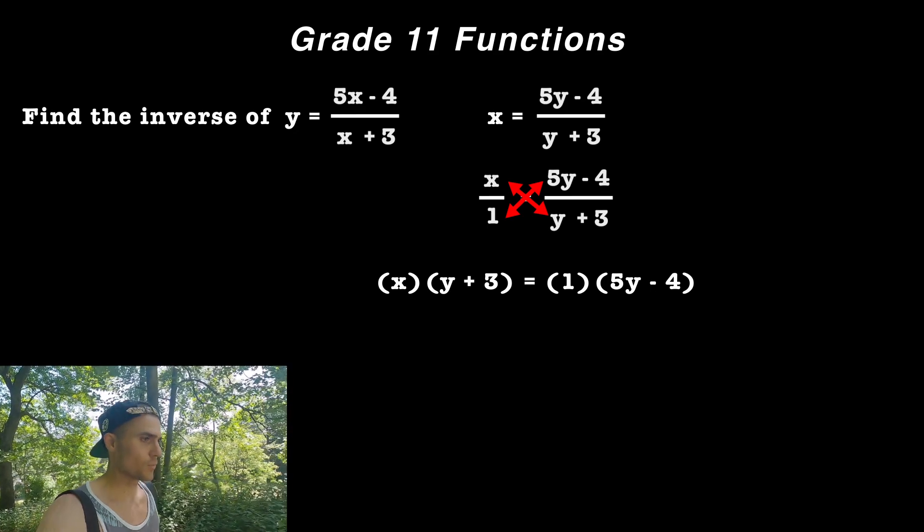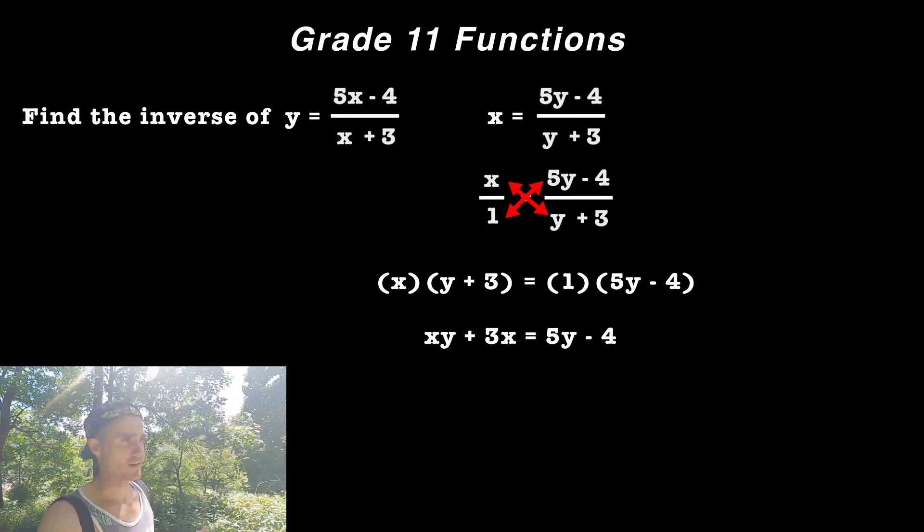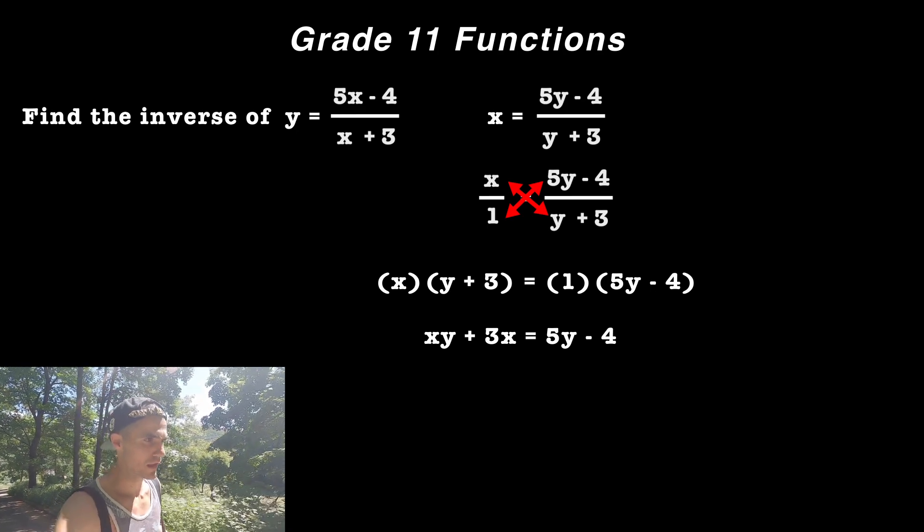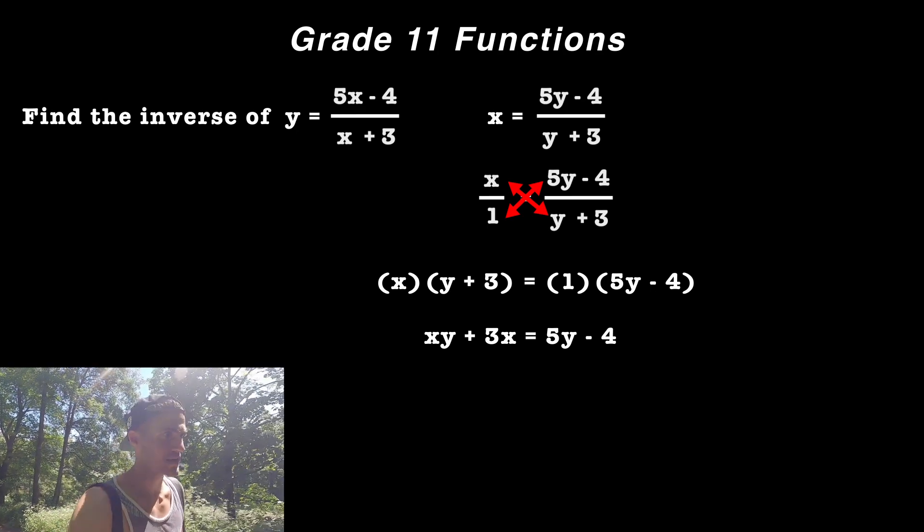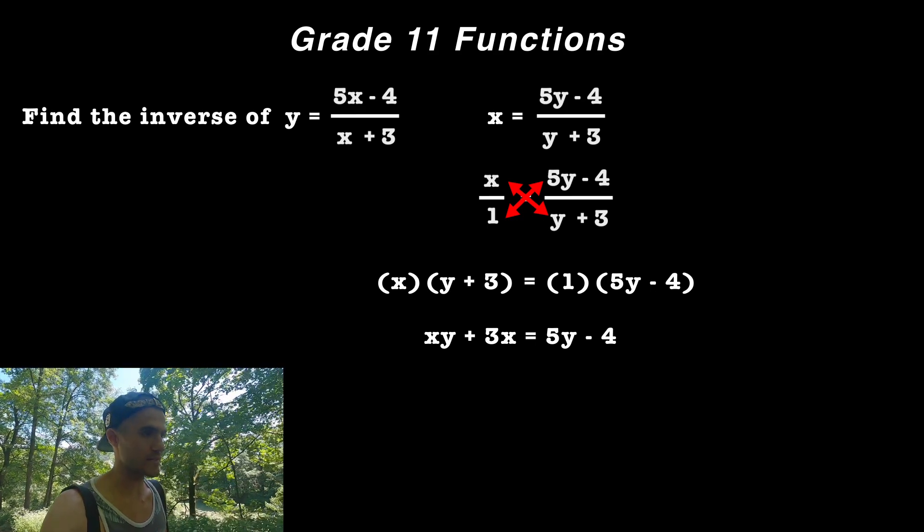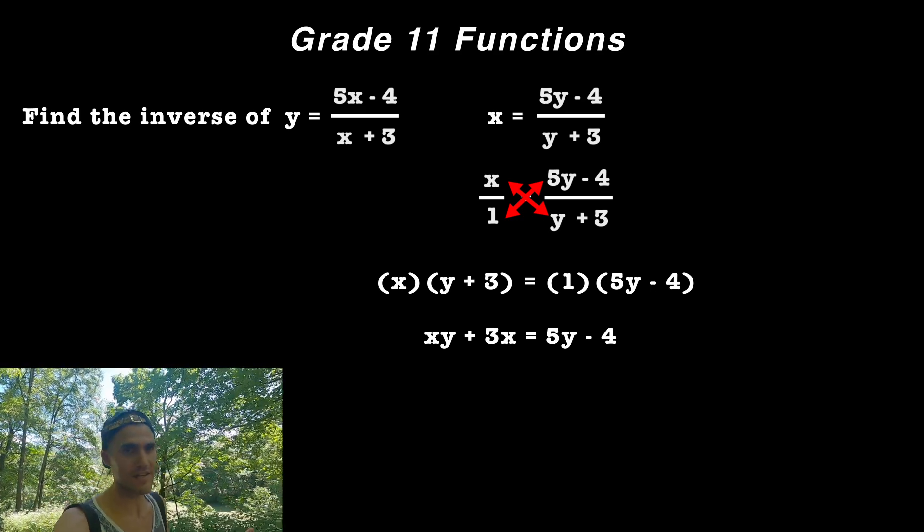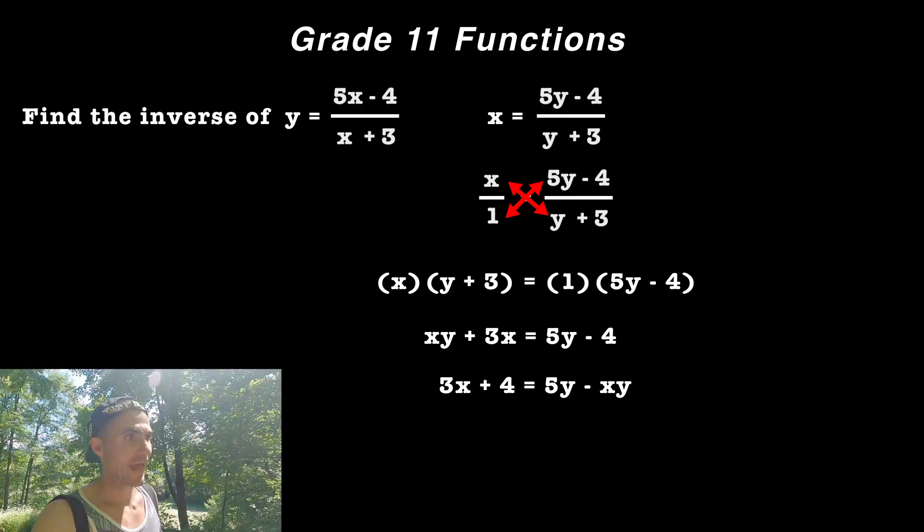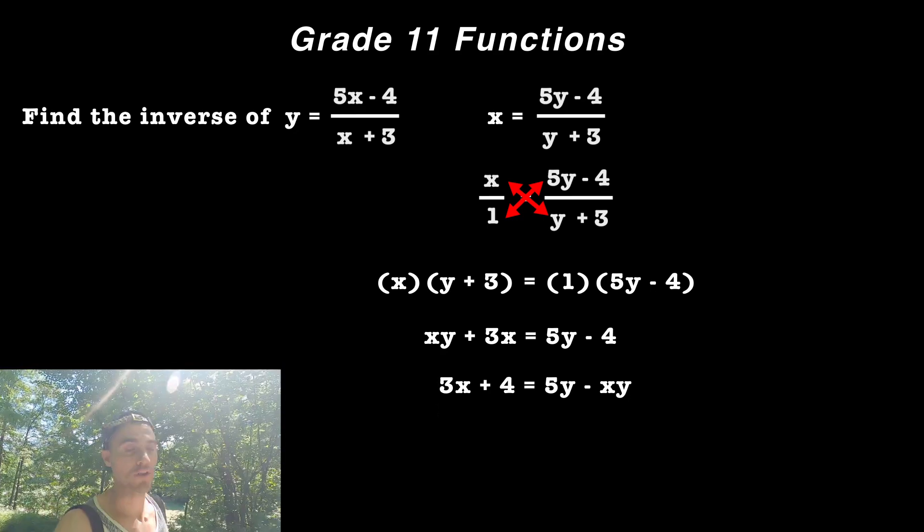And then what we could do is we could distribute that x inside the bracket, so we would end up with xy plus 3x. And then from here what you want to do is you want to take all of the expressions that have a y value attached to it and bring it to one side. So that xy on the left side, I'm going to bring it over to the right side, and then the negative 4 I'm going to bring over to the left side.